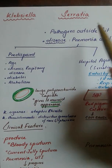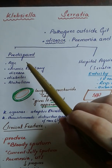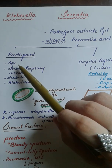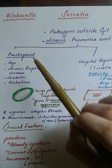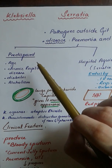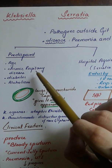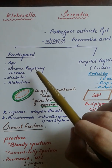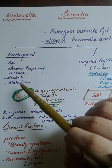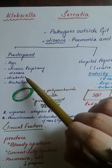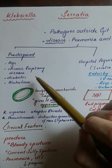Klebsiella occurs in elderly patients and UTI also occurs in the elderly, with Klebsiella being the prominent organism. It also occurs in patients who have chronic respiratory diseases such as cystic fibrosis and COPD. It can also affect diabetics whose immunity is less, and alcoholics whose immunity is suppressed due to high alcohol consumption.